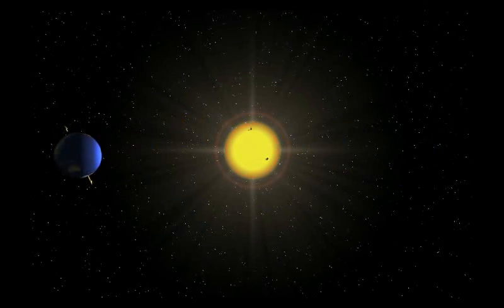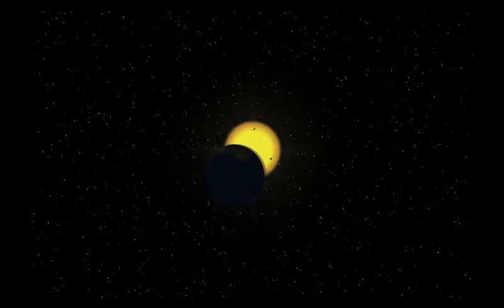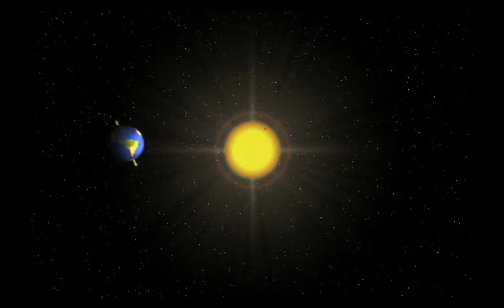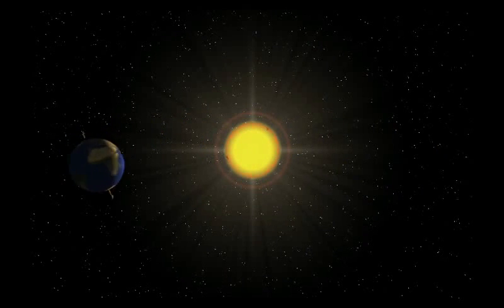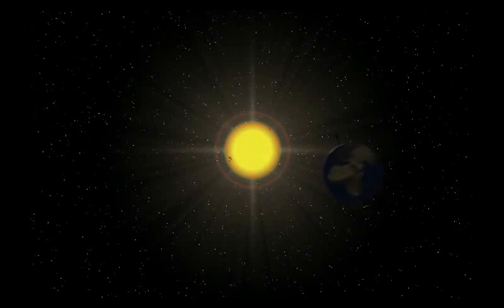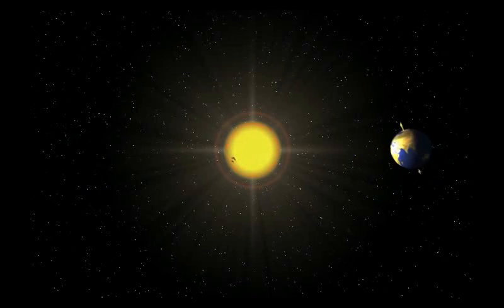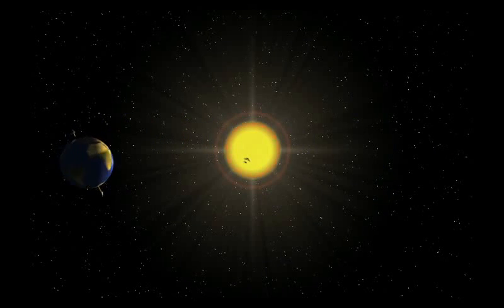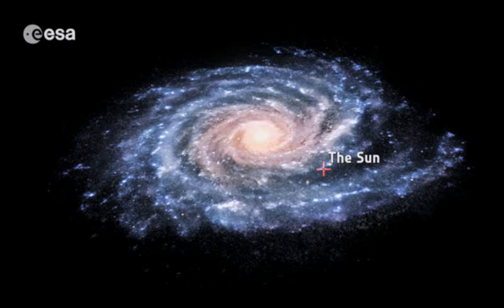There is one more thing flat earthers complain about regarding our view of the stars that I want to address. They ask why does Polaris, and all the other stars as well, remain in the same place from our perspective year after year if the Earth is rotating on its axis and on a 23.5-degree tilt and also revolving around the sun and also moving around the Milky Way galaxy.